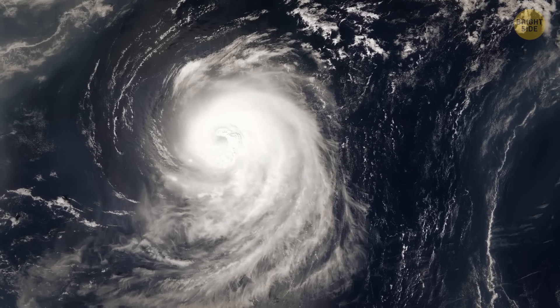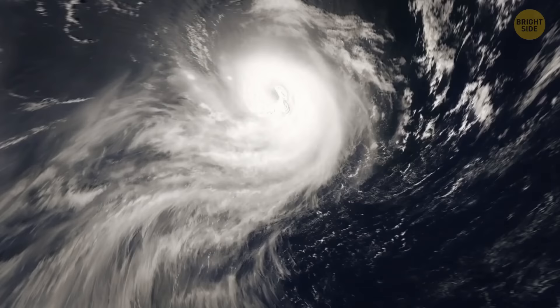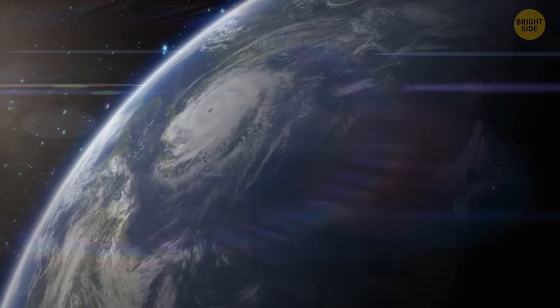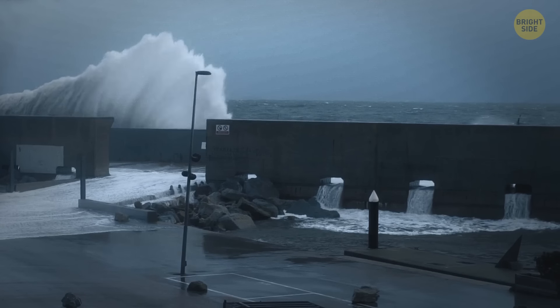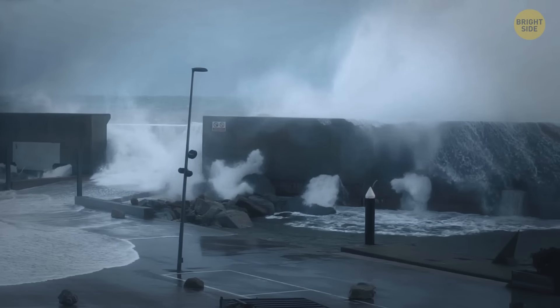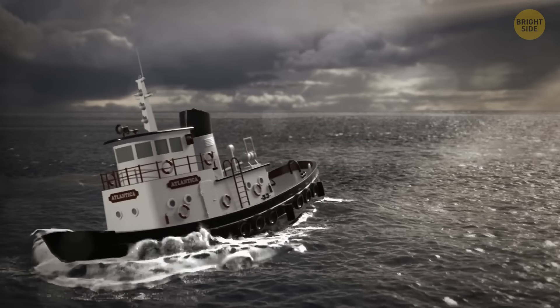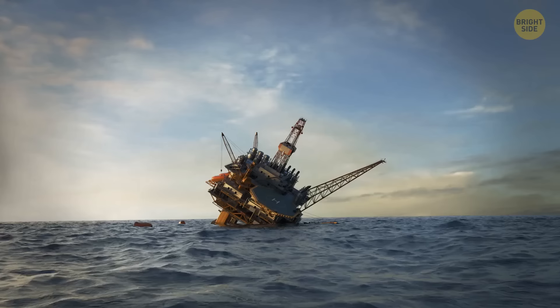If whirlpools happen during the collision of different currents, it means that you can predict their appearance in advance. But there are unpredictable natural phenomena in the seas and oceans that pose a danger for small boats, yachts, giant ships, and oil rigs. The phenomenon is called a rogue wave.